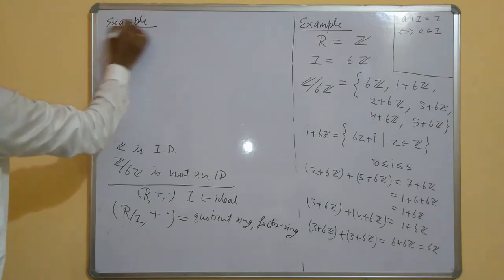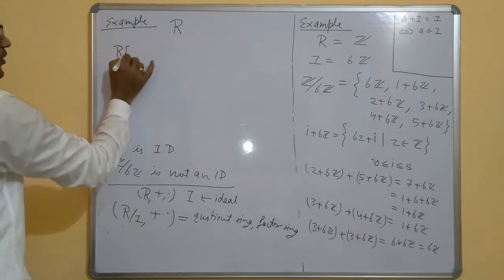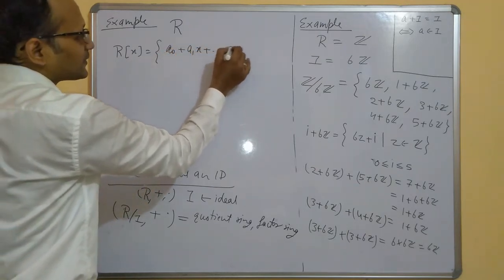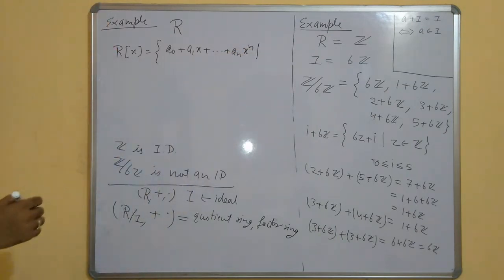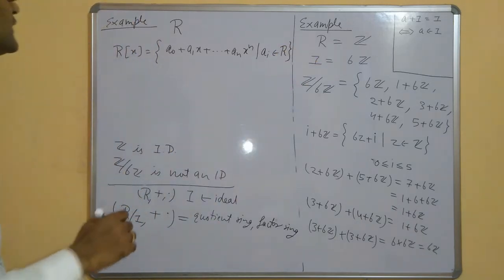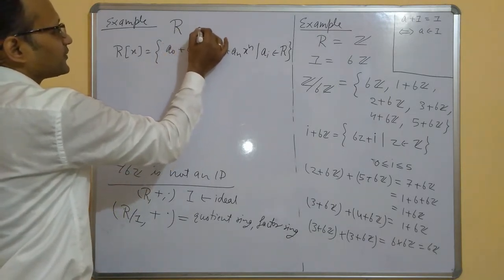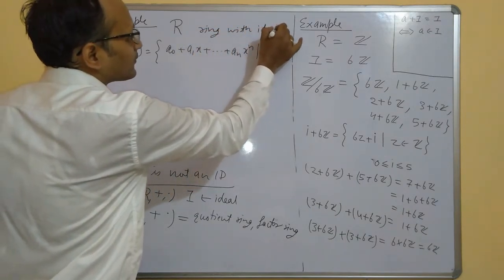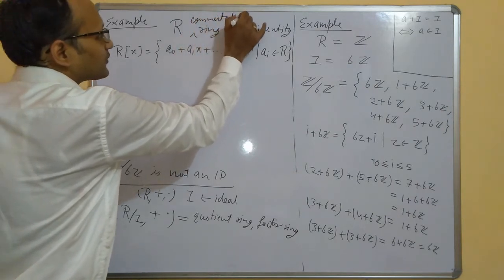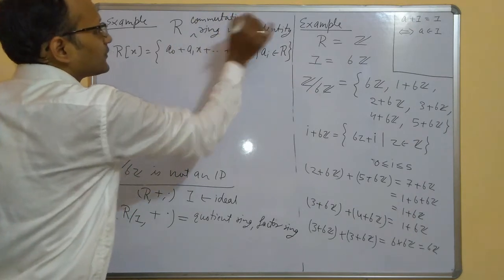Let me write the first example. Suppose I take some ring R, and over R consider the polynomial ring. This is the set of all polynomials a₀ + a₁x + ... + aₙxⁿ such that aᵢ belongs to R, and x is some indeterminate. For convenience, I am taking R to be a commutative ring with identity.